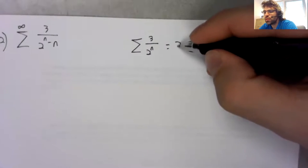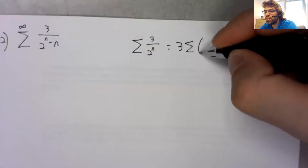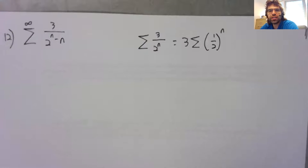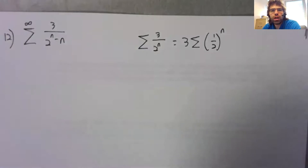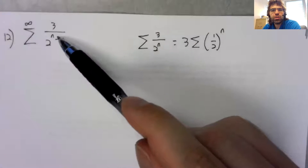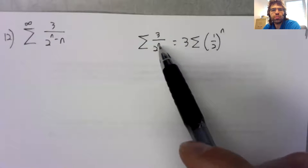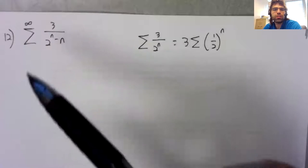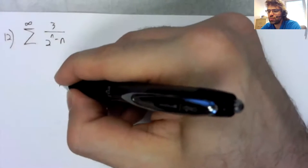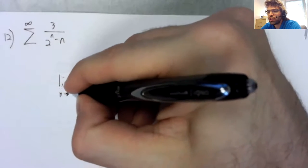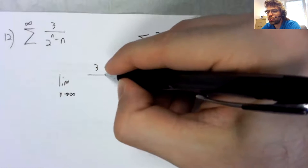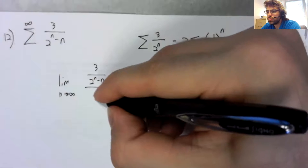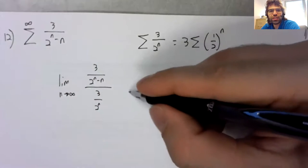And if we didn't have the n there, we would have a convergent geometric series. So the argument I want to make is that these terms look like these terms, and this series converges. So this series converges. And the correct way to make that argument